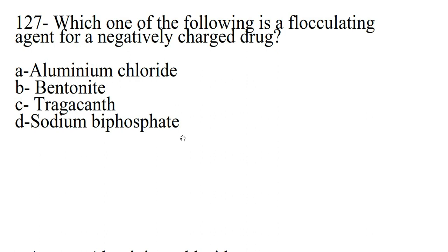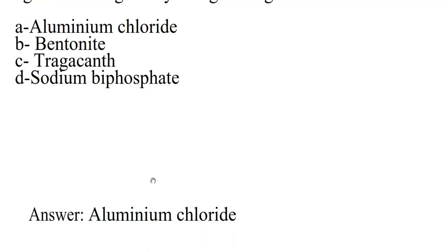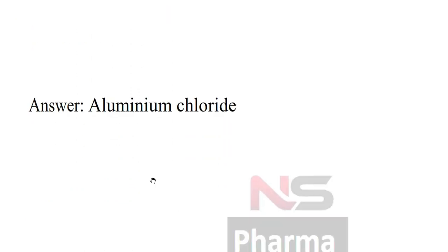Next question. Which one of the following is a flocculating agent for a negatively charged drug? Option A Aluminium chloride, Option B Bentonite, Option C Tragacanth, Option D Sodium Biphosphate. Answer: Aluminium chloride.